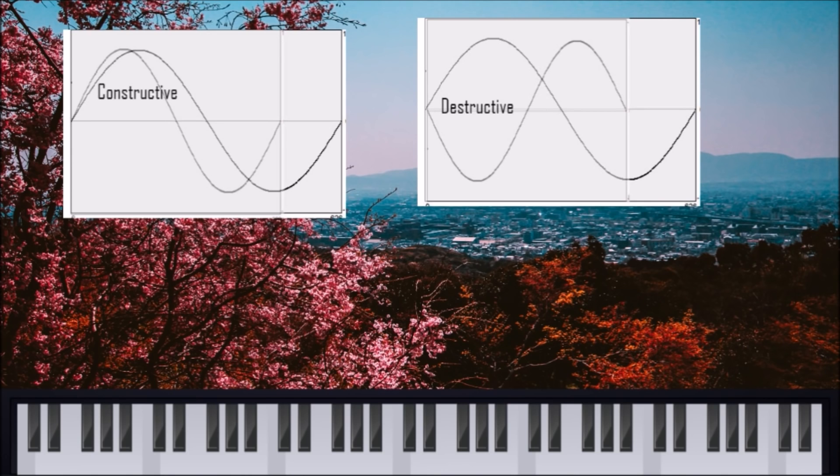Now, the thing is that when you have two different pitches, this destructive versus constructive oscillates. So, you get an oscillation between the two frequencies being constructive and destructive, and that gives you another pitch, an undertone, and that is where dissonance comes from.